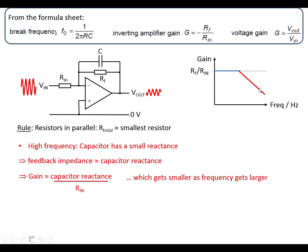The gain gets smaller at high frequencies, and the frequency at which these two regimes change is called the break frequency. We calculate this using 1 over 2πRC. In this case, we're using the feedback resistor because that's in the same part of the circuit as the capacitor. At 10 times the break frequency, we get a tenth of the maximum gain.